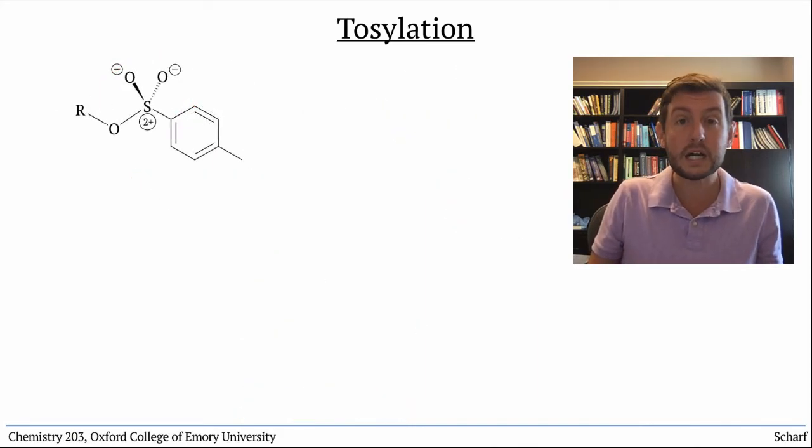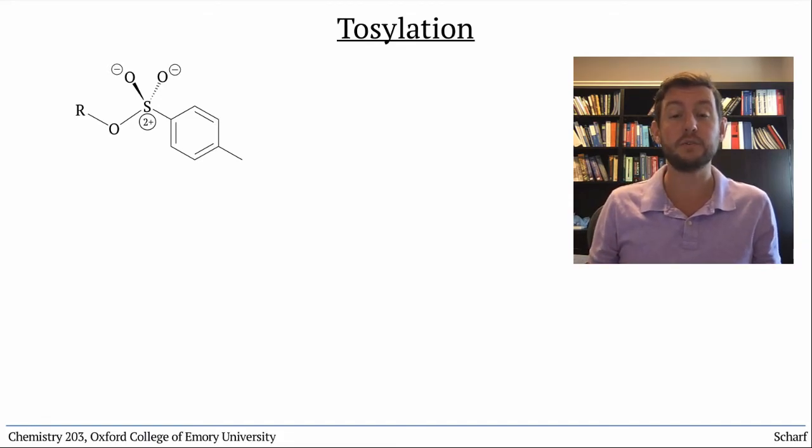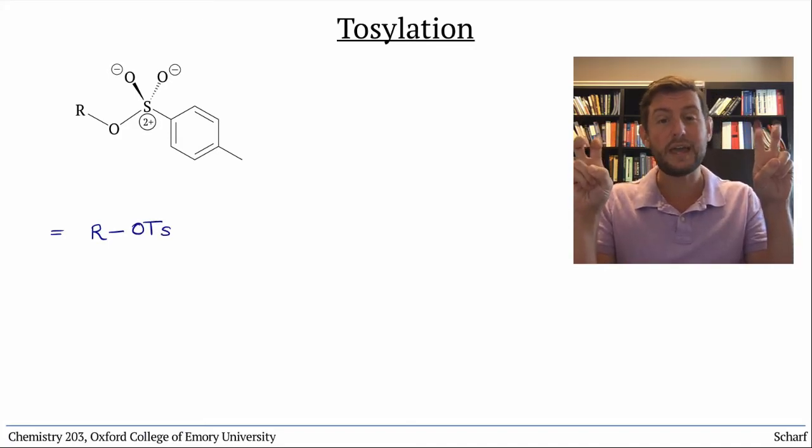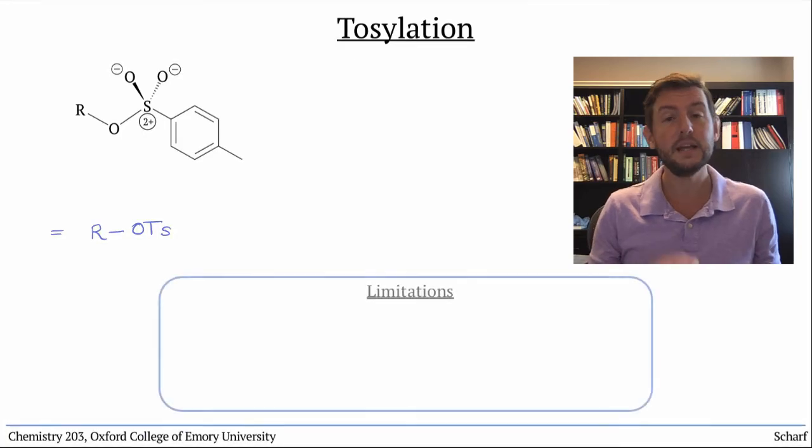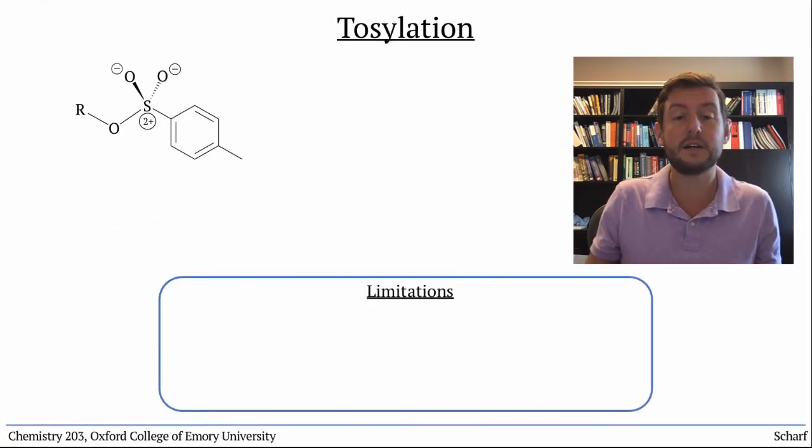Once tosylated, alcohols become very good leaving groups, just like halides, Cl, Br, or I. For this reason, tosylates are sometimes called pseudo-halides. Tosylates can undergo SN1 or SN2 reactions almost as readily as chlorides, bromides, or iodides can.